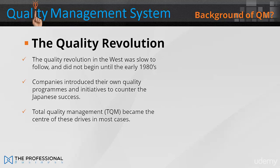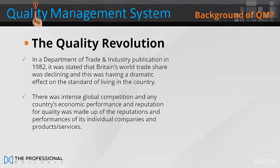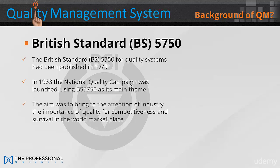The quality revolution in the West was slow to follow, and did not begin until the early 1980s, when companies introduced their own quality programs and initiatives to counter the Japanese success. Total quality management became the centre of these drives in most cases. In a Department of Trade and Industry publication in 1982, it was stated that Britain's world trade share was declining, having a dramatic effect on the standard of living. There was intense global competition, and a country's reputation for quality was made up of the performance of its individual companies, products and services. The British Standard 5750 for quality systems had been published in 1979, and in 1983, the National Quality Campaign was launched, using BS 5750 as its main theme.